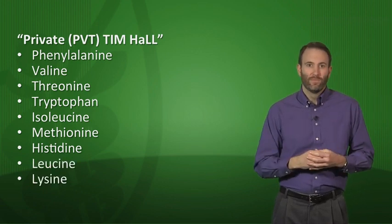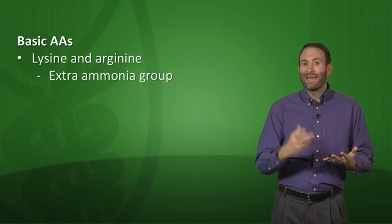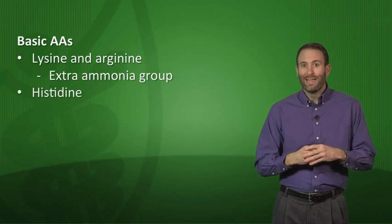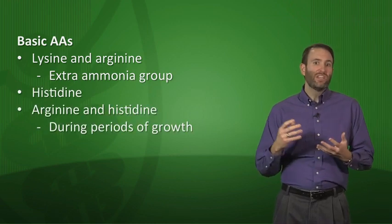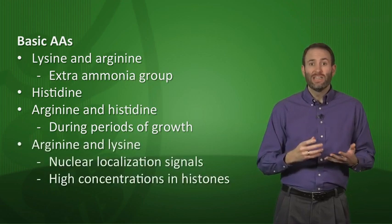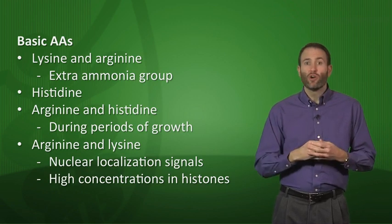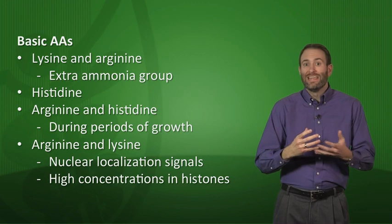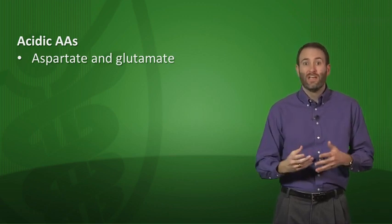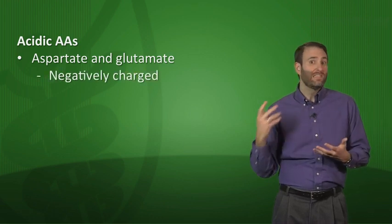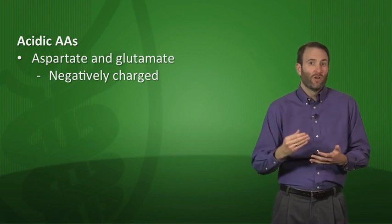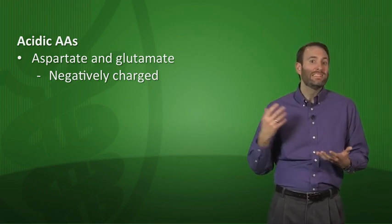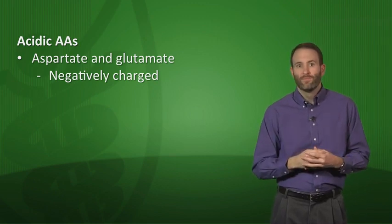Now let's talk about acidic versus basic amino acids. Lysine and arginine are particularly basic — they have an extra amino group. Histidine is also basic. Arginine and histidine are important during periods of growth; arginine and lysine are important for nuclear localization signals and are found in high concentrations in histones, where their positive charge interacts with negatively charged DNA. The acidic amino acids are aspartate and glutamate, negatively charged at body pH. Note that histidine, though classified as basic, actually has no charge at body pH.